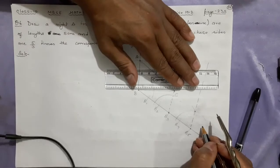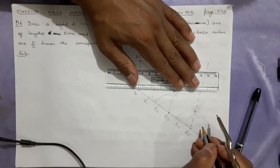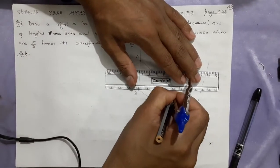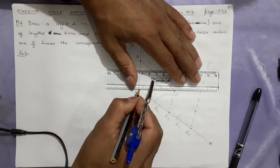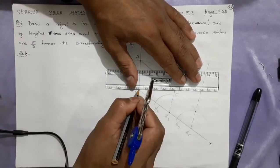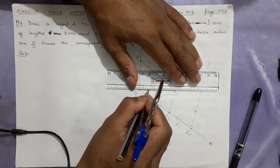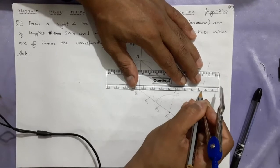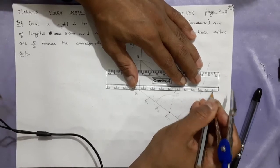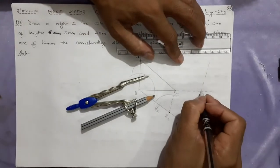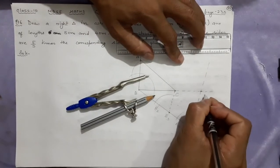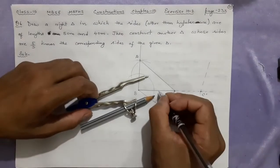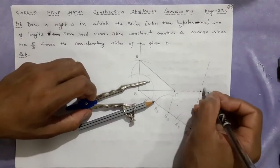Now extend this line so that C dash is found. Put your compass here carefully, joining the line and increasing that line. Wherever they meet, that will be your C dash.